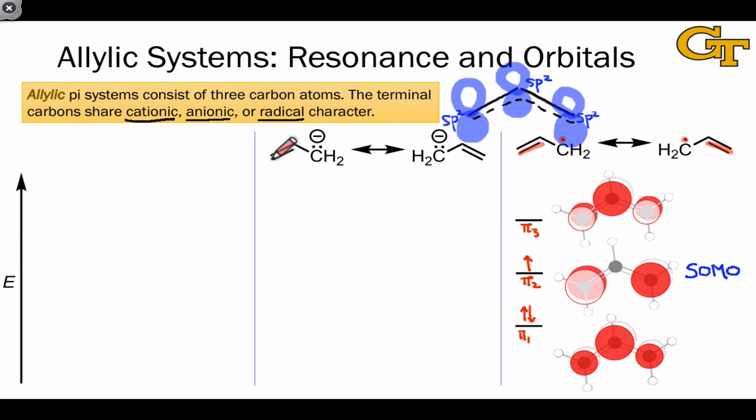If we add one electron to the allylic radical, we arrive at the allylic anion, which contains four pi electrons now. We still have three pi molecular orbitals here, because there are three atoms in the pi system, and now the lowest energy orbital is still completely occupied, the next orbital up is also completely occupied, and pi 3, the highest energy orbital, is still empty.